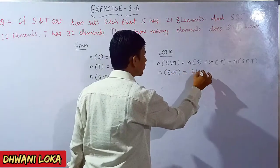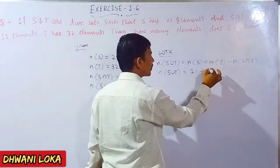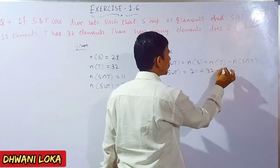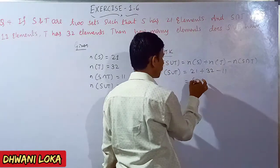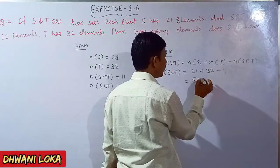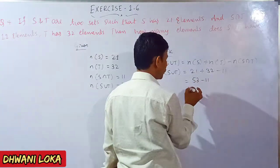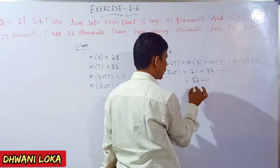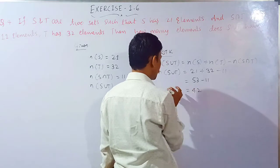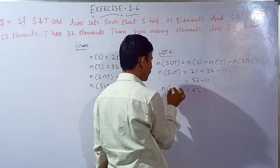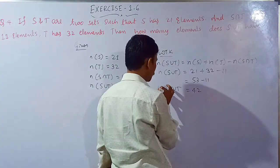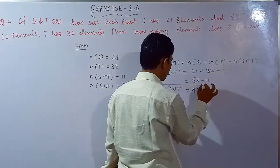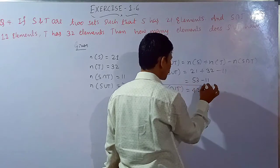Using the formula: N of S union T equals N of S plus N of T minus N of S intersection T. Substituting: 21 plus 32 minus 11 equals 42. Therefore, N of S union T is equal to 42 elements.